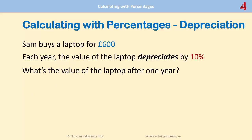Things work slightly differently when something drops in value by a certain percent. Sam buys a laptop for £600. Each year the value of the laptop depreciates by 10% — it goes down by 10% every year. What's the value of the laptop after one year?